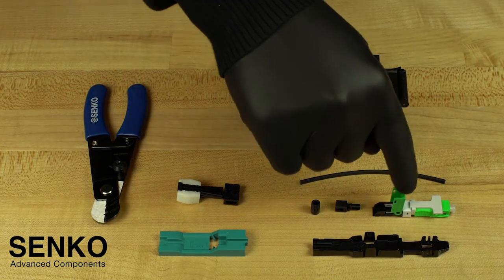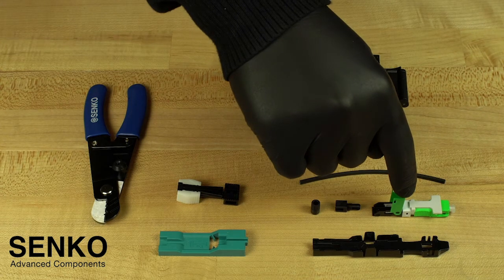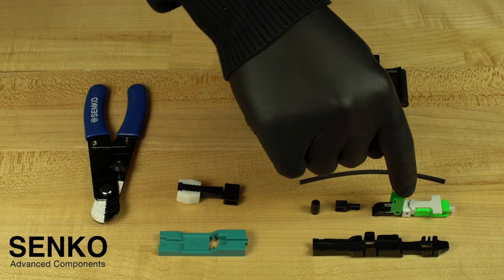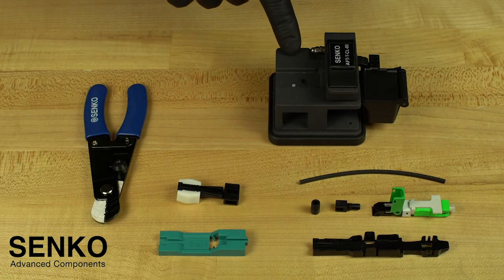In this case, the connector is green indicating APC, blue would indicate UPC, and you will need a precision cleave tool.